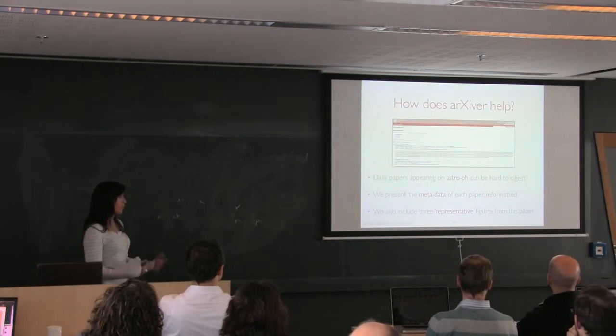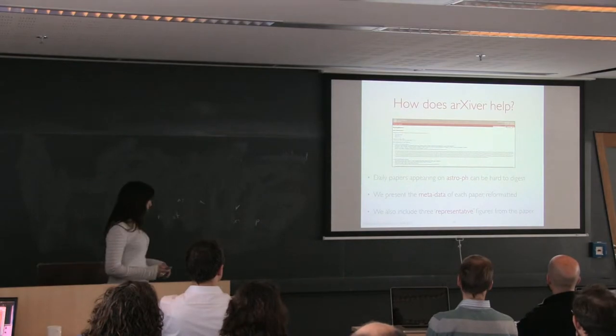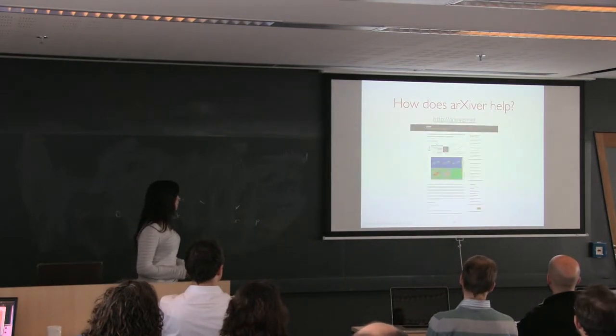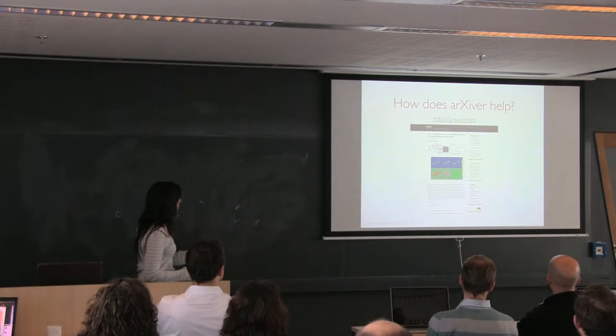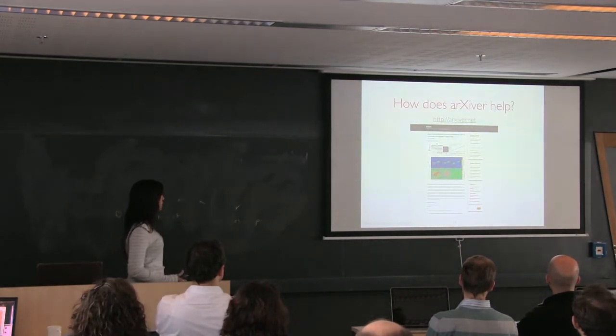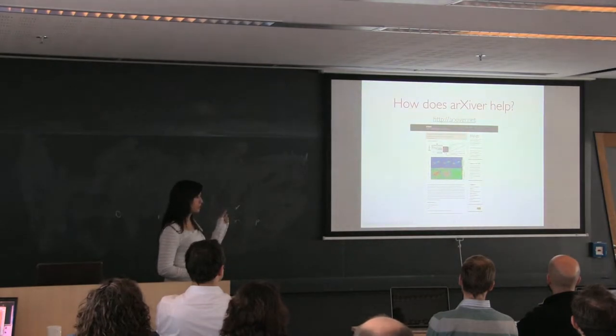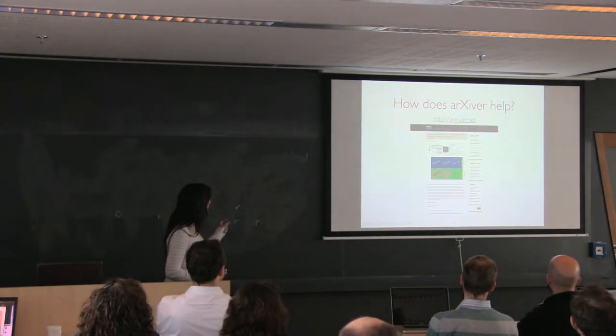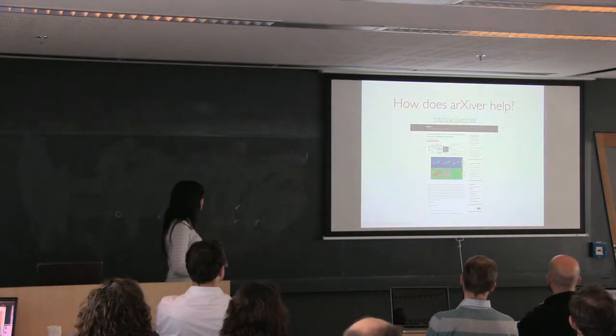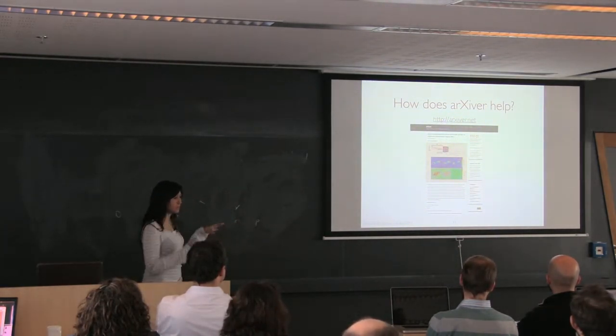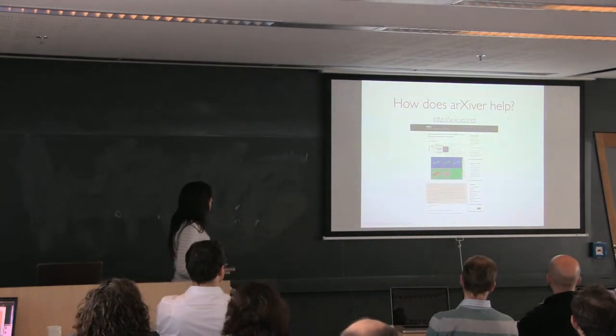Adding figures from a paper helps you to easily judge what that paper is about in a quicker way. This is a standard thing that you'll see if you go to the Arxiver website. You've got the title, in brackets is the category in astro-ph that it's in, so this one's an instrumentation paper. You also have the link straight to the arXiv page, then three figures.